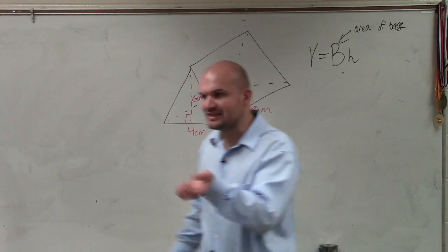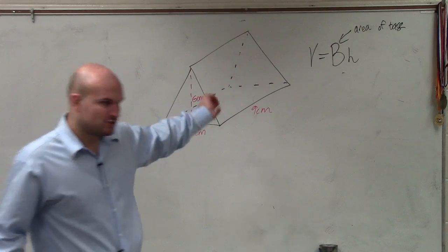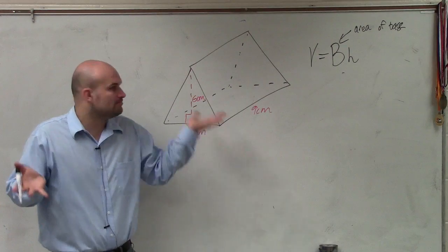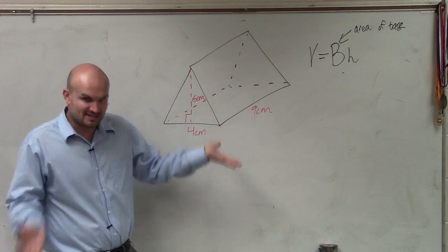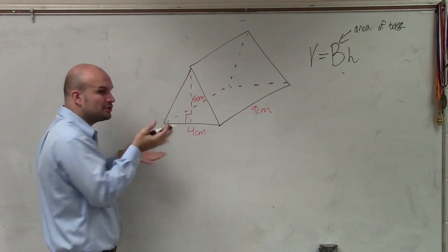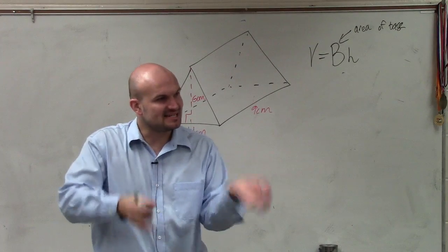Now again, when we're dealing with a prism, this is a triangular prism. We don't want to use the base of this rectangle, because it is not multiplied twice. It doesn't continue on. So I want to make sure that when you're looking at a prism, the base is the same as the top.